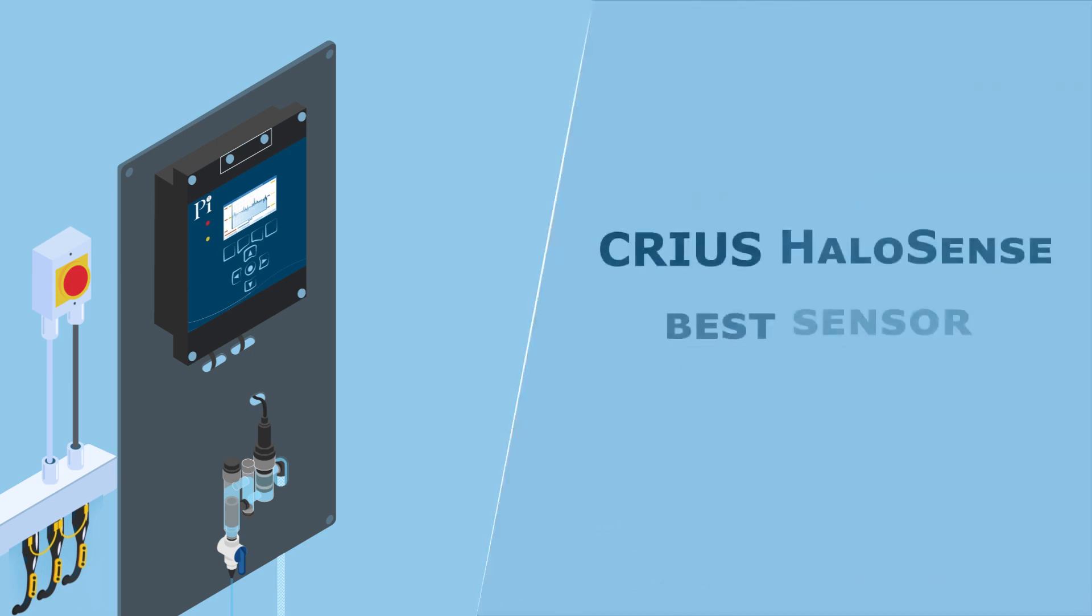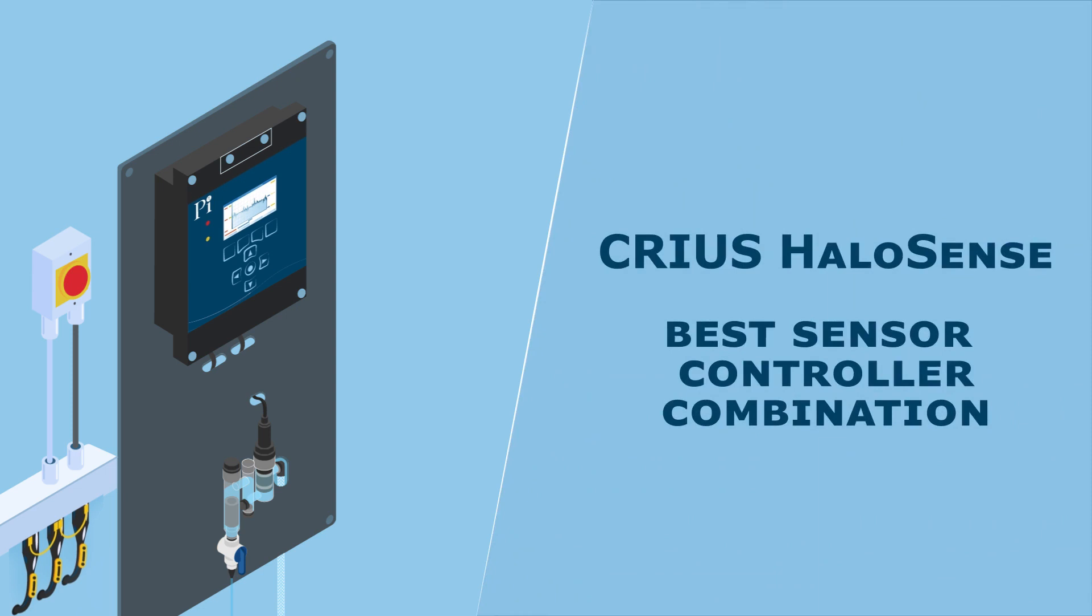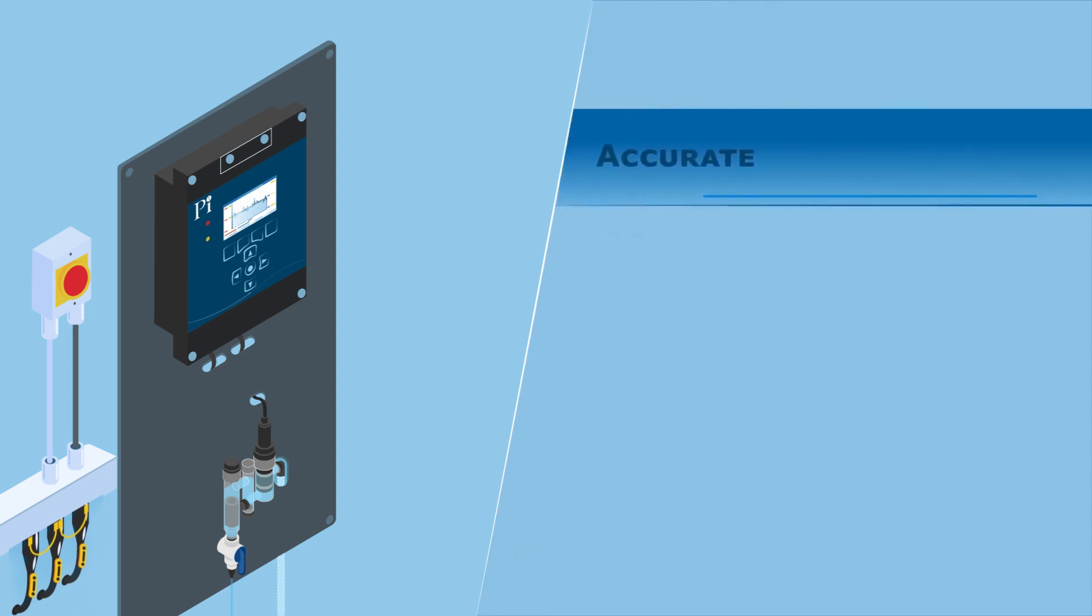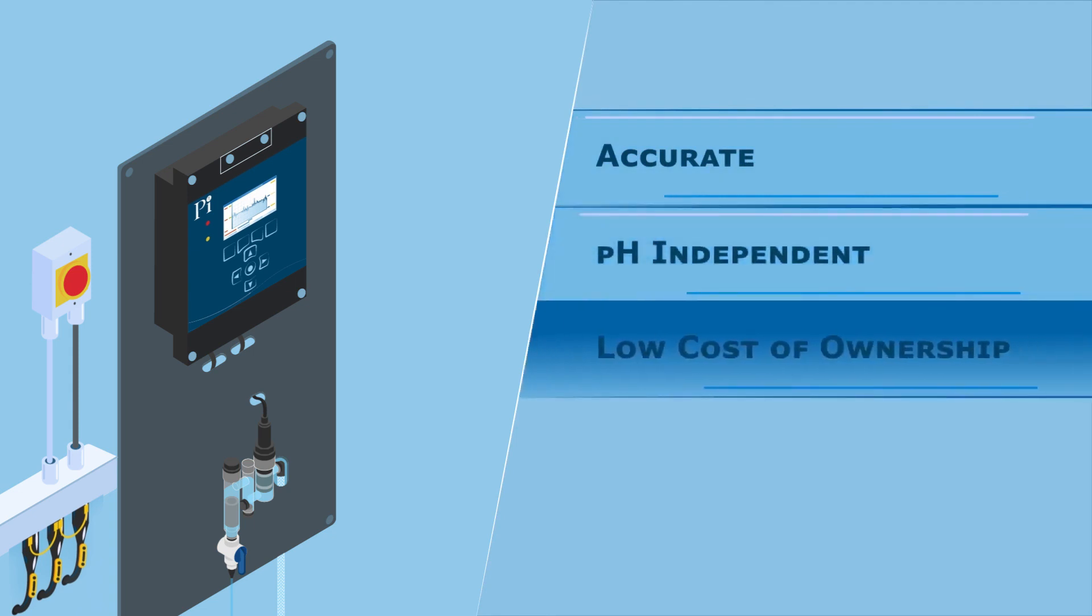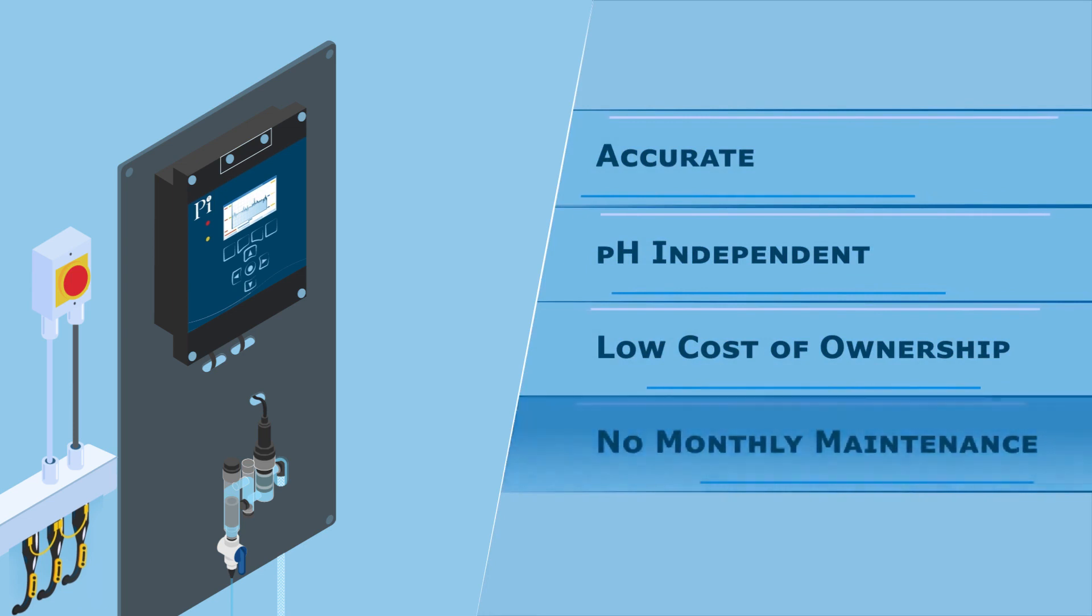Cryos HaloSense is arguably the best chlorine sensor controller combination available in the market today. It's accurate, pH independent and offers a low cost of ownership with a full 12 months between maintenance events, making it the instrument of choice for a variety of applications.